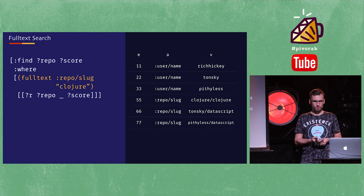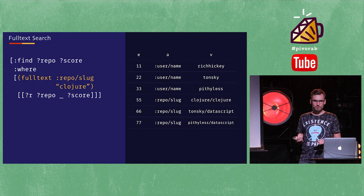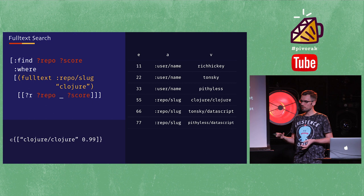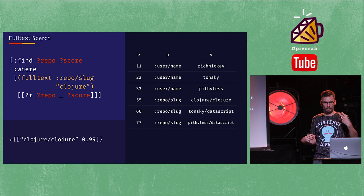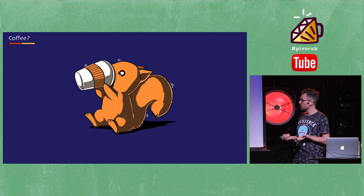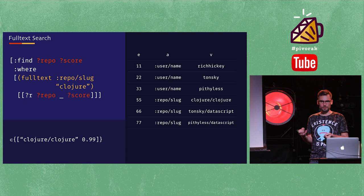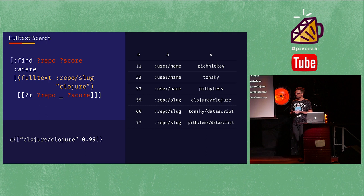Another wonderful example: Datomic, because it runs on the JVM, has access to Lucene — a full-text search engine. So you have full-text searching built right into the database, not because the database does it, but because it allows you to interact with the host platform and give those results back to the system so you can keep doing your logic programming as if everything was normal. Here's an example of returning the repos that match a full-text search for 'closure', and that 0.99 is the rank the Lucene search engine gives you for how good this specific result is.